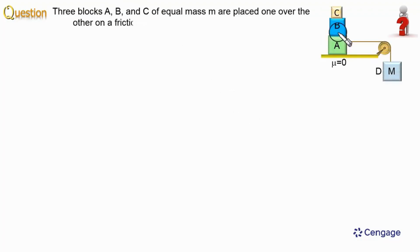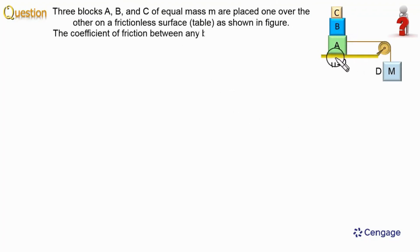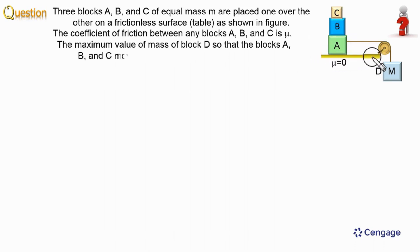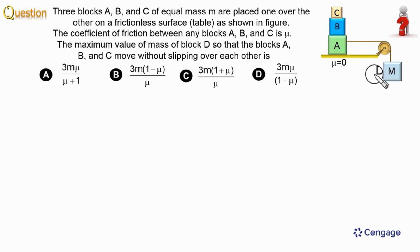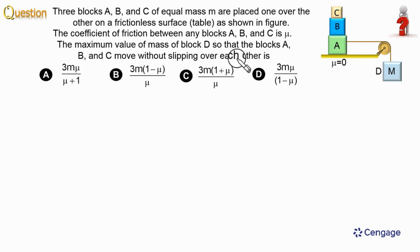In this question, 3 blocks A, B, C having equal mass m are placed over a smooth horizontal surface. The coefficient of friction between block A and B, and B and C, is mu. We need to calculate the maximum value of mass of block D so that blocks A, B, C move without slipping over each other. We are given 4 options.